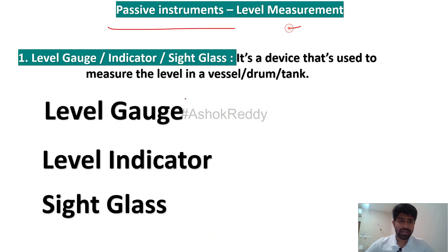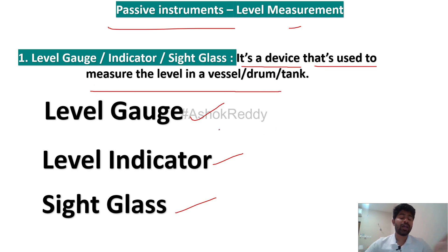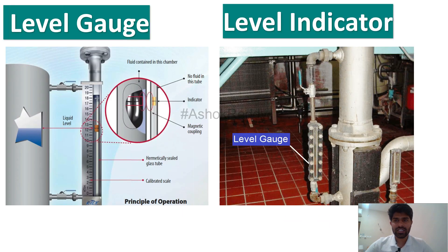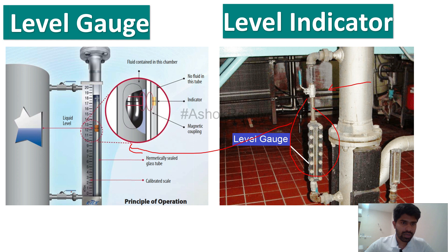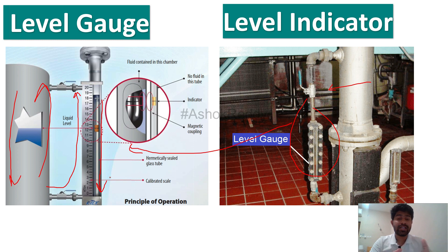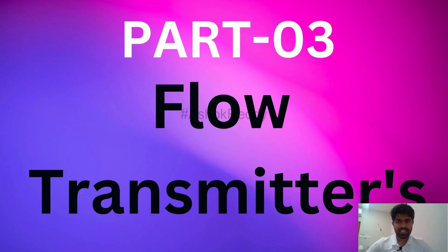Next we will know about passive instruments. Here we have the level gauge, level indicator, and sight glass. These are devices used to measure level visually and they don't need any external power supply to work. If there is a tank, we install the level gauge on the side — if the level in the tank is increasing, the level gauge also increases, and if the level decreases, the gauge also decreases. The working principle and what material is used inside the gauge will be explained in a detailed video.